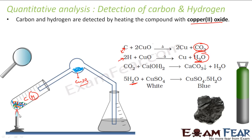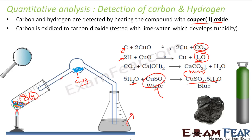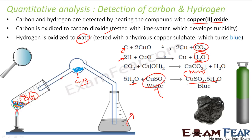If hydrogen is present, it will give water. To find the presence of water, you add anhydrous copper sulfate (white). The moment you put it in contact with water, it becomes blue because it forms CuSO₄·5H₂O. If carbon is present, on heating it gives carbon dioxide, and you pass it through lime water — it turns milky. So: carbon is oxidized to CO₂, tested with lime water; hydrogen is oxidized to water, tested with anhydrous copper sulfate which turns from white to blue.